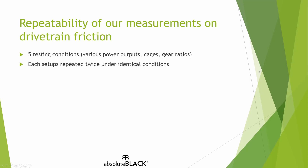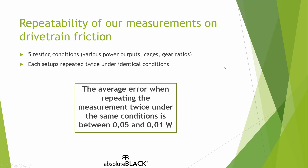So going back to drivetrain friction: if we want to accurately compare differences at different setups, it comes down to the repeatability of the measurement, not the absolute accuracy. We've done internal testing at five different testing conditions — changing power output, derailleur cage, and gear ratios. Each setup was repeated twice under identical conditions: same time after launch, same temperature, same cadence, same power. We found that our device produces very repeatable measurements, with an average error ranging between 0.05 and 0.01 watts — a very marginal error.